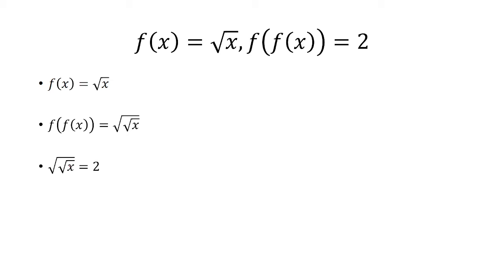First, let's do it one at a time. I want to undo the outside square root, so I'm going to square both sides. The outer square root gets cancelled, and then 2 squared will be 4. Now I want to undo the inside square root, so I square both sides to get x equals 16.